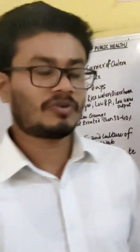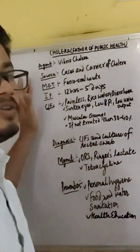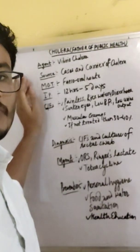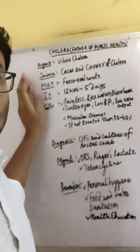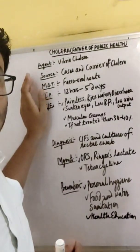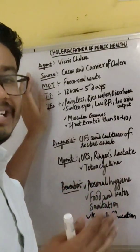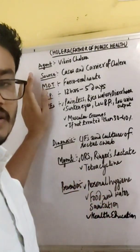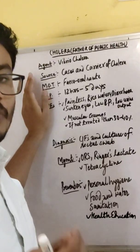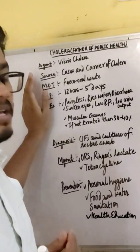Namaste everyone. Today we are going to discuss about Cholera. Cholera is also called the father of public health, because it was first studied by John Snow in 1848 in the UK.